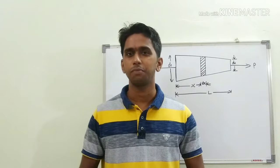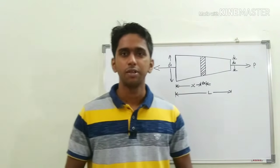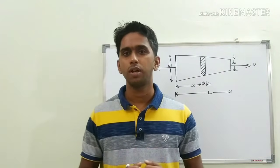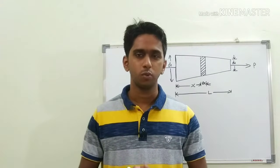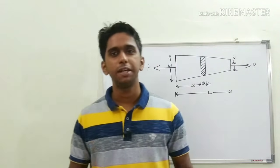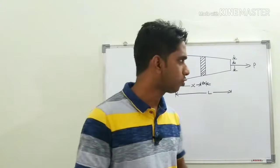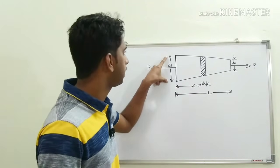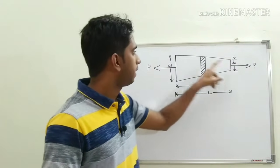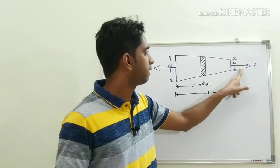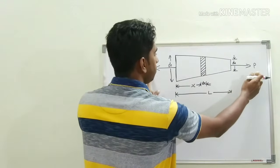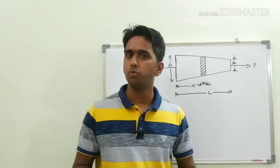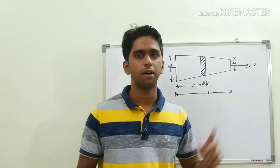Today we are going to discuss a simple topic from the subject of Mechanics of Solids — the deformation of a uniformly tapering circular bar under a load P. Here I have drawn a uniformly tapering circular bar having initial diameter D1 at one end and final diameter D2 at the other end, and the bar is subjected to a tensile load P.